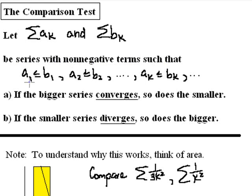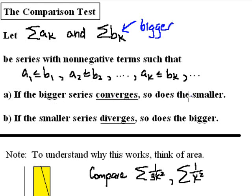So that a sub k is what we're always going to refer to as the smaller of the two series, so that each one of its terms is always less than or equal to the terms of the b series: a1 ≤ b1, a2 ≤ b2, and so on. If this is the case, then if the bigger series — the b sub k series — converges, that forces the smaller series to converge as well. And on the other hand, if the smaller series diverges, then there's no way the bigger series can be small enough to converge, so it forces the bigger series to diverge as well.